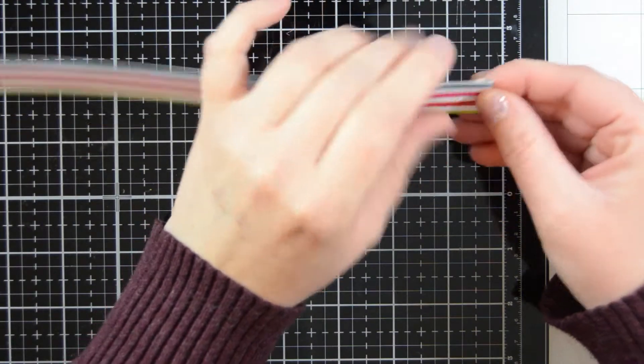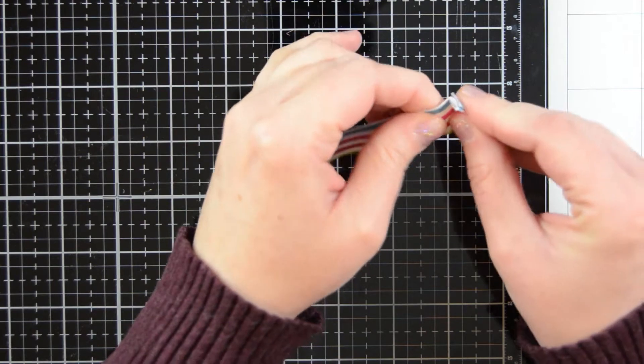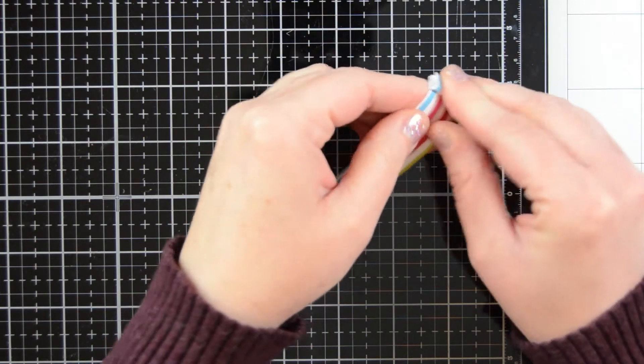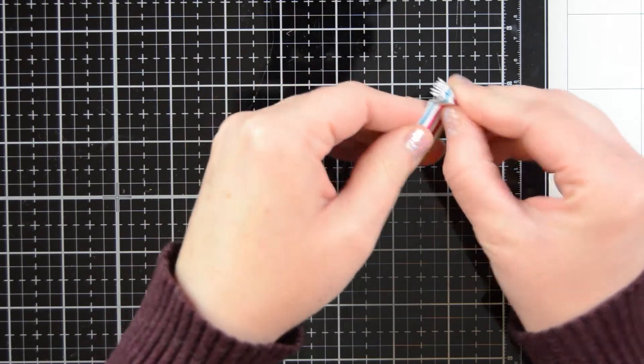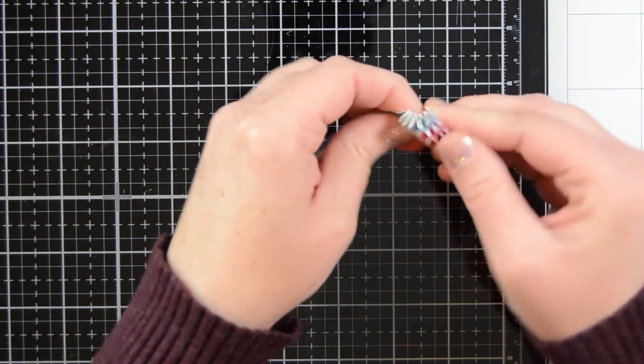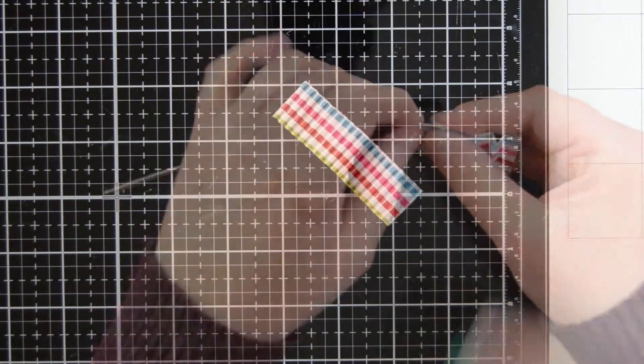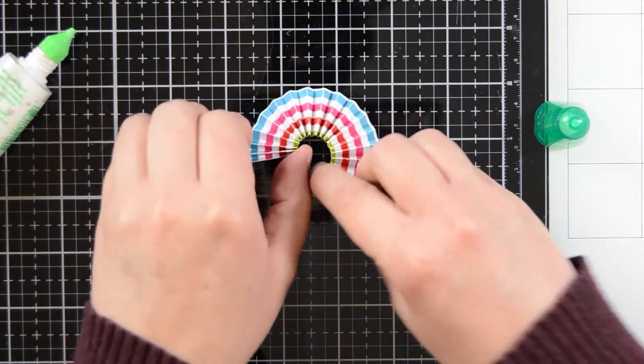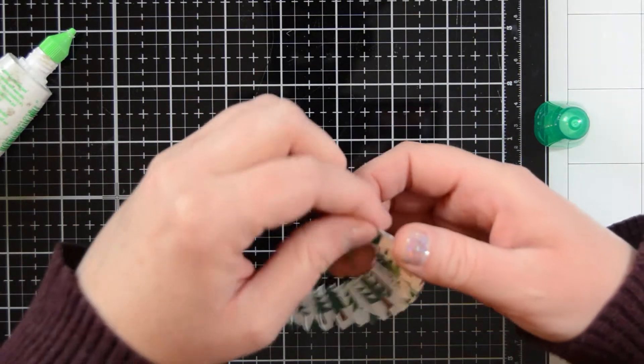Then next you want to cut it to half of the width that you want your rosette to be. So I cut mine at a half inch because I want it to be one inch and you'll see how that comes together. After you do that then you accordion fold it the whole way down. It's a tedious process but it turns out so cool and it's really not that hard. It's pretty mindless. See then when I bring it all the way around it's one inch.